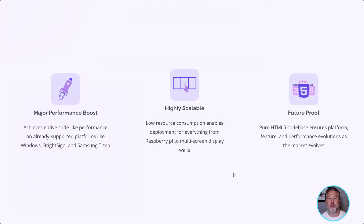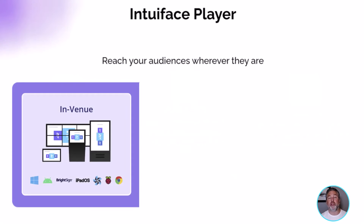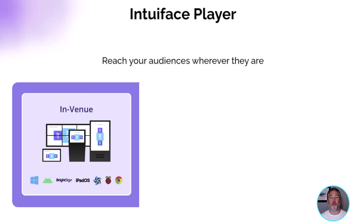We can optimize performance, optimize scalability, squeeze every last drop of speed out of that platform using technology that is platform independent. It gives us enormous flexibility and gives you a lot of new options as well. This applies to every existing in-venue platform that Intuiface has supported — Android, BrightSign, iOS on the iPad, Samsung Tizen, Chrome OS, and Raspberry Pi — with the exception of Windows, which has its own individual technology built using .NET.